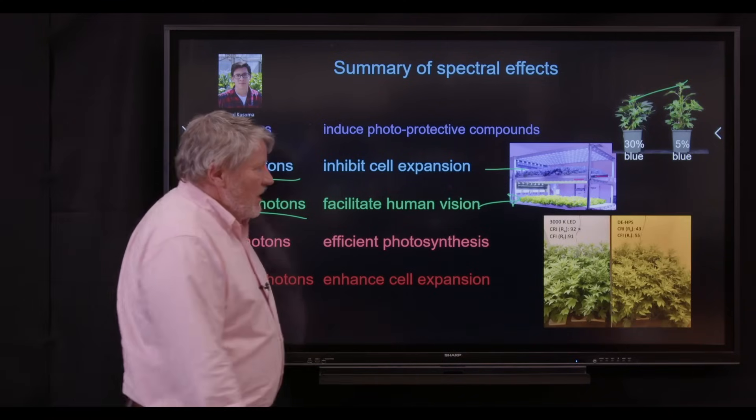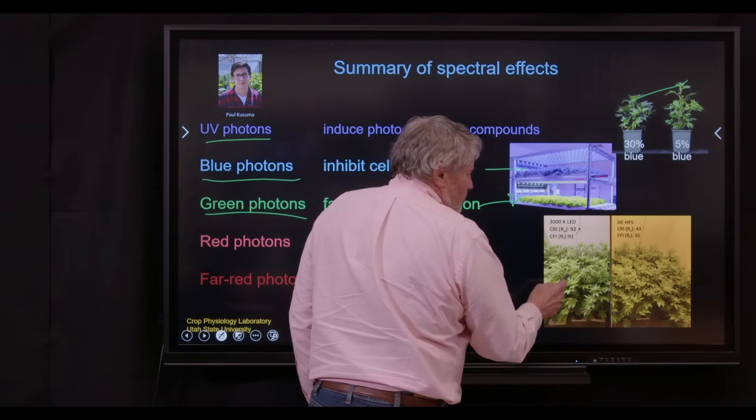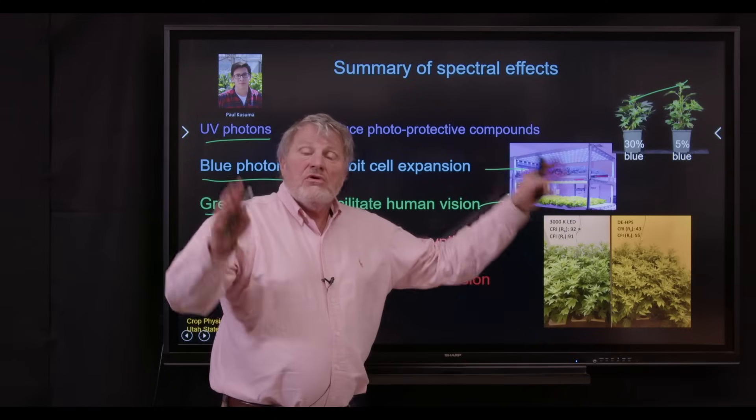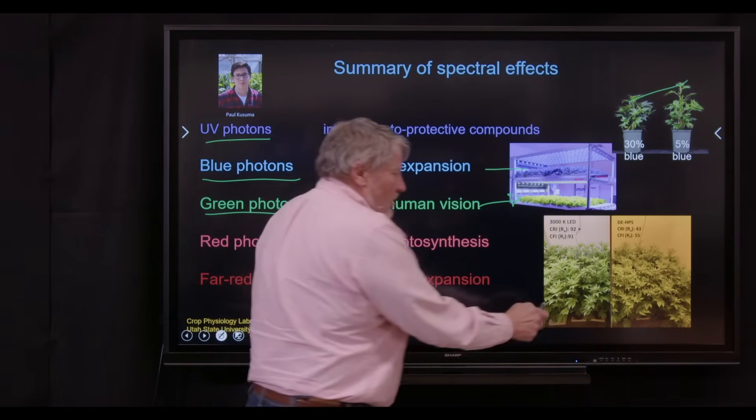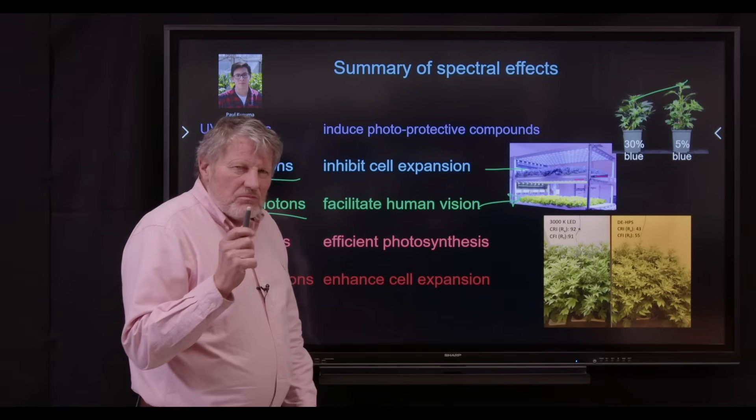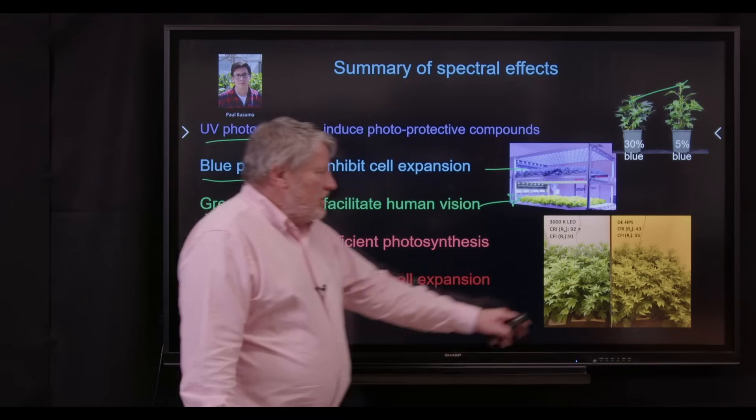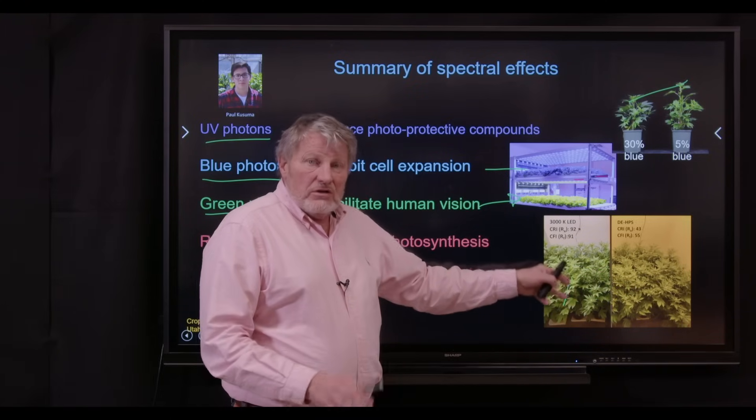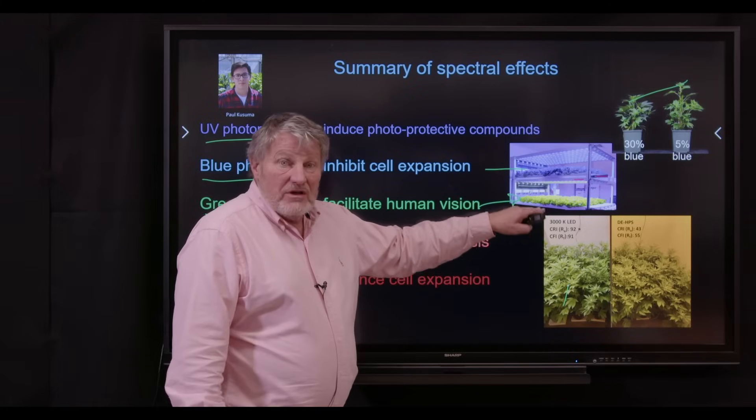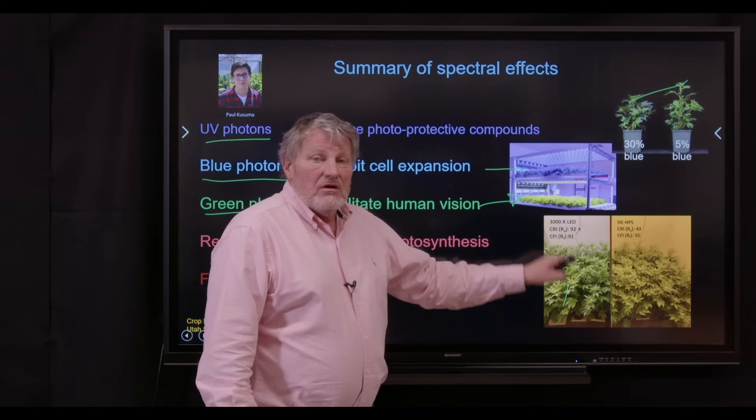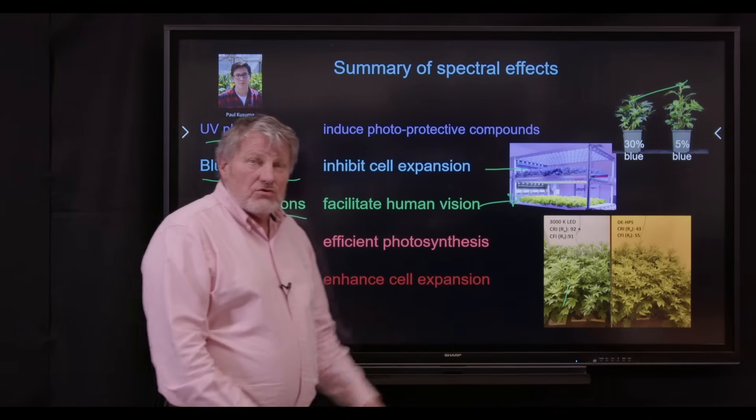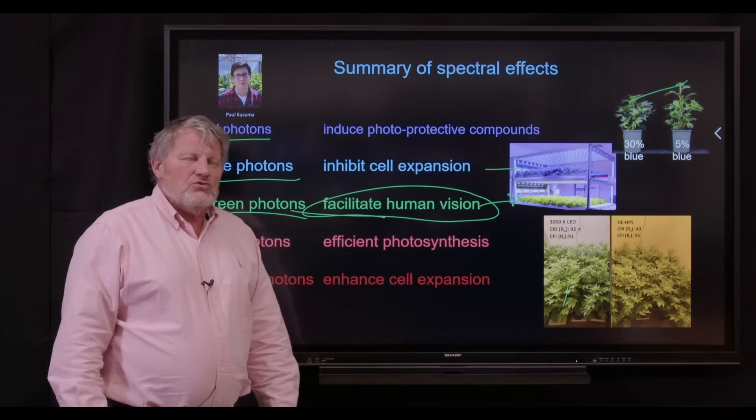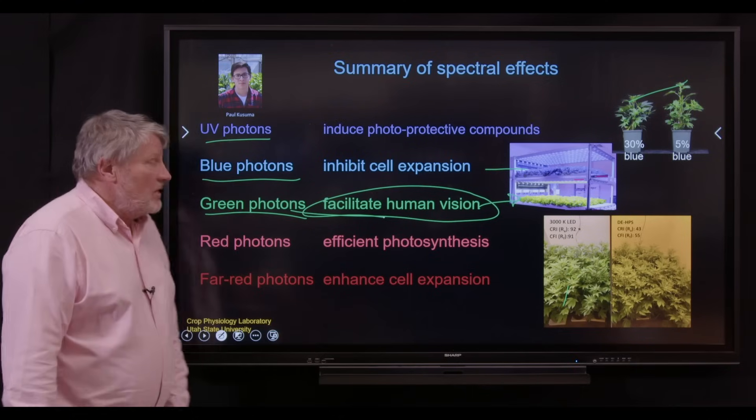This is cannabis under a high pressure sodium light and under some LEDs, and you can see the difference in color here. These just look more natural. The growth was the same. It didn't matter. But in this study, we got some spider mites, a microscopic insect. We couldn't see those on the high pressure sodium lights. But here in the LEDs, with a better color rendering index, we could find the insects. We can also diagnose nutritional disorders. So the bottom line is, green photons are huge for helping people see disorders and microscopic insects in plants.